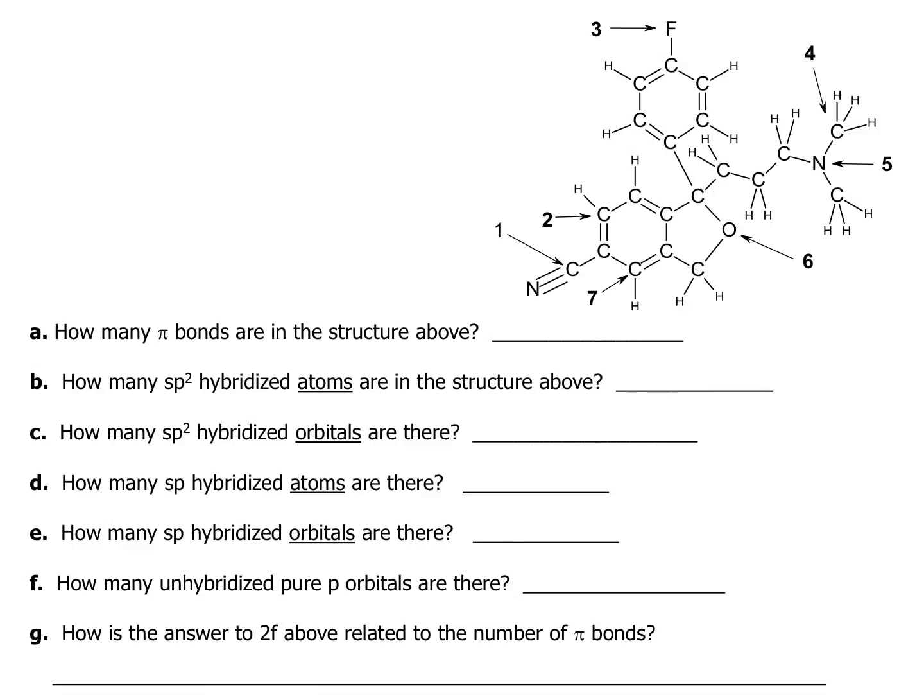For the next part of this question, we have some concerns about how many pi bonds are in the structure above. Every time you see more than one bond, you are going to have a pi bond. So certainly with this carbon and nitrogen, I see two pi bonds there. In the benzene rings, here's another three, four, five, six, seven, eight. And I believe I have a total of eight pi bonds.